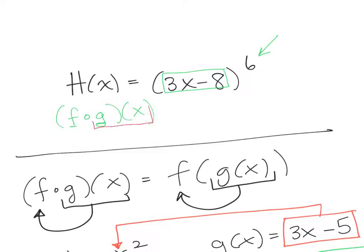So it's really asking what's the inside function, that would be our g, which would be this guy. And then what's our outside function, which would be this guy. So I'm going to say that f of x will be a function that takes stuff to the 6th power, and g of x is going to be that 3x minus 8.